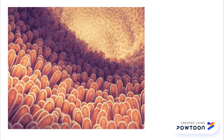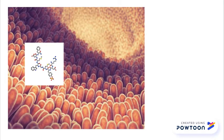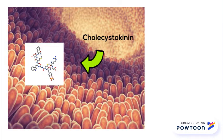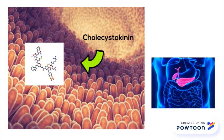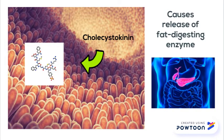Once it has entered the intestine, the final hormone that regulates the stages of digestion, called cholecystokinin, is released from the intestinal linings and causes the release of a fat-digesting enzyme from the pancreas to process the nutrients in the food and move it to be excreted.